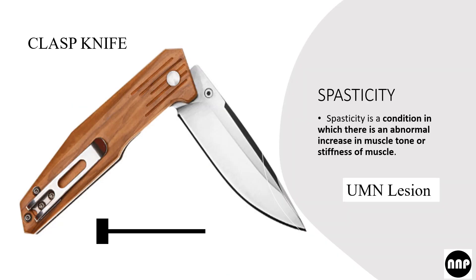Spasticity is a condition in which there is an abnormal increase in muscle tone or stiffness of muscle, and it occurs in upper motor neuron (UMN) lesions. To summarize: cogwheel rigidity is seen in parkinsonism, while spasticity — the clasp knife type — is seen in UMN lesions.